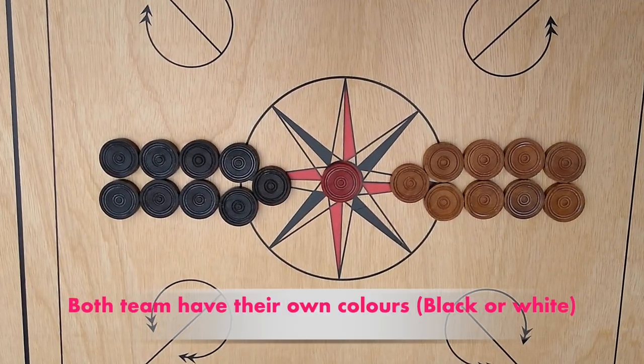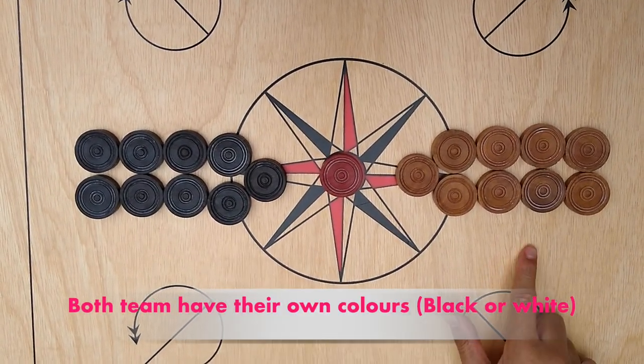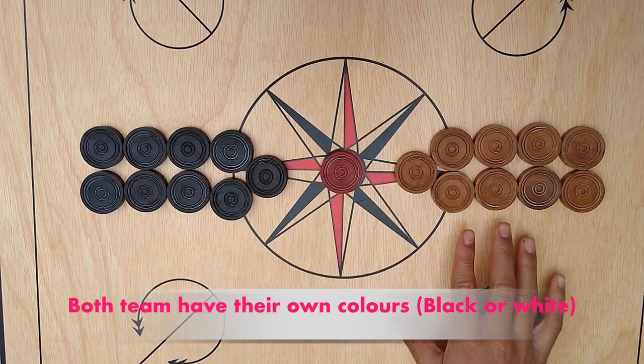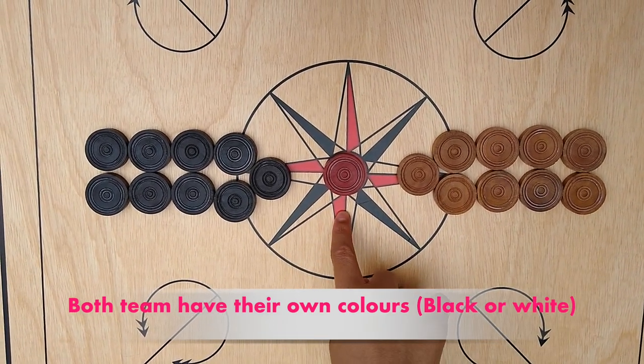Both teams have their own colors, black and white. There are nine black coins, nine white coins, and one red coin which is the queen.